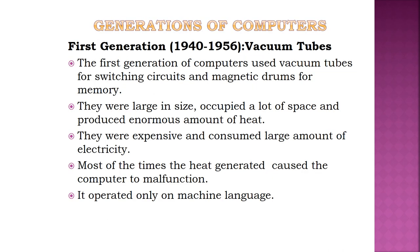Now let us see the Generations of Computers. A generation in computer terminology is a change in technology. Initially the term was used to distinguish between varying hardware technologies, but nowadays a generation includes both hardware and software making up an entire computer system. There are five computer generations, each discussed in detail with its time period and characteristics.